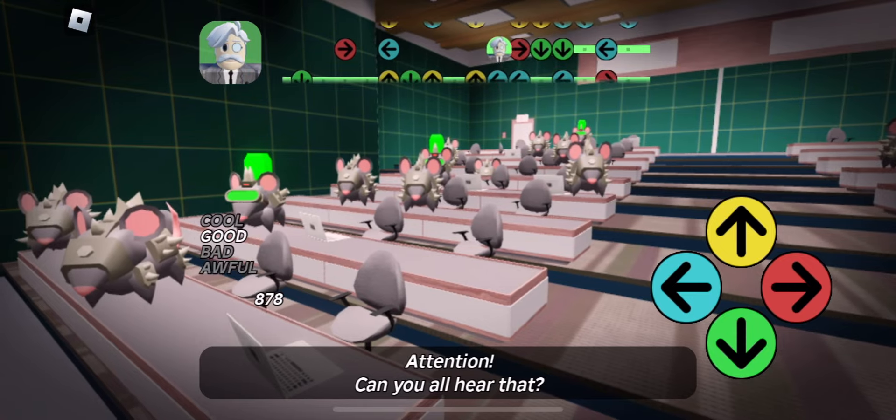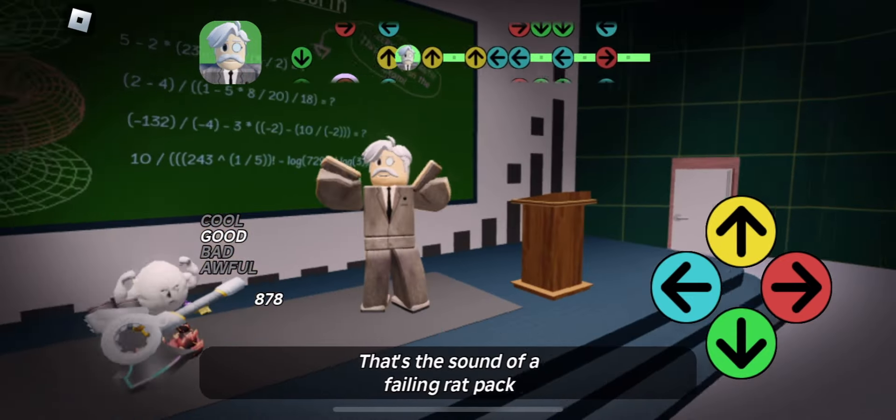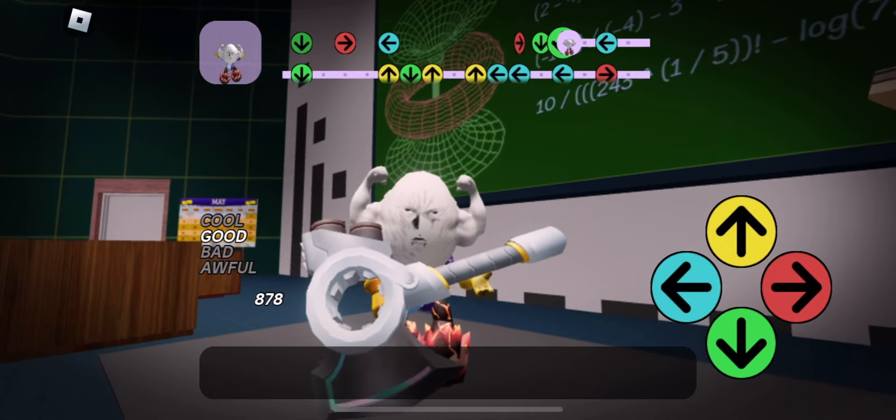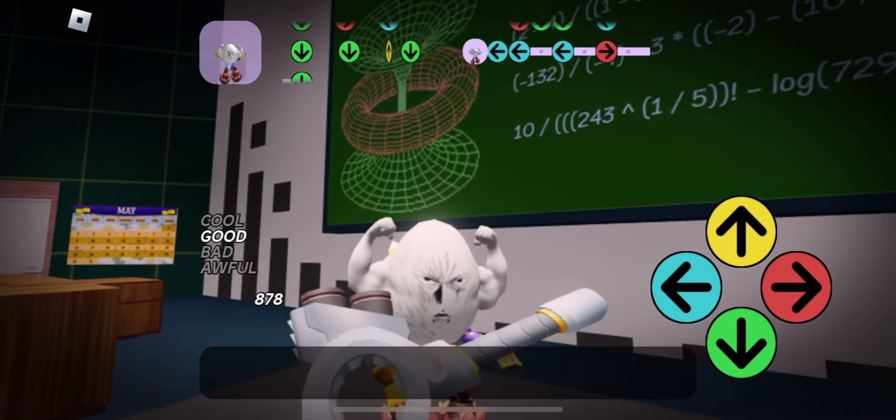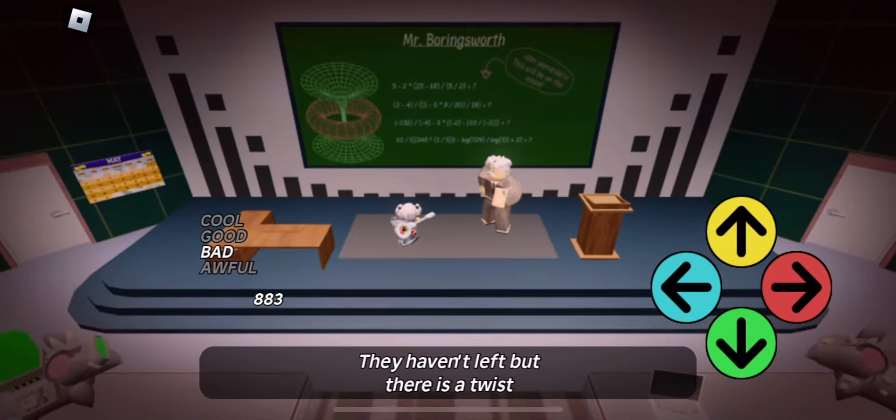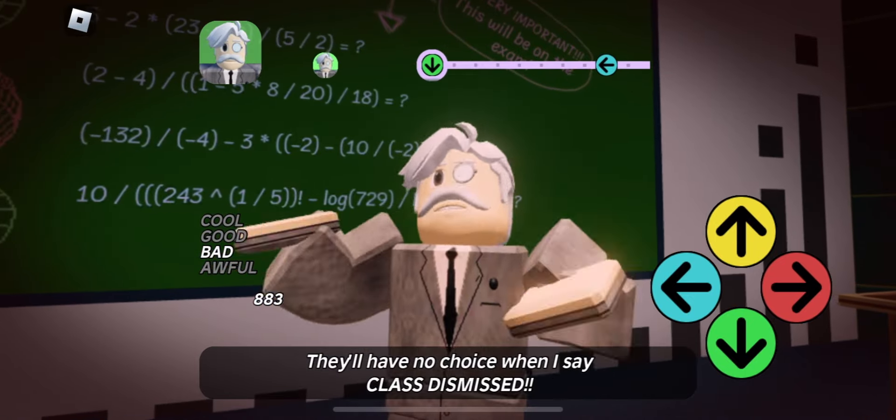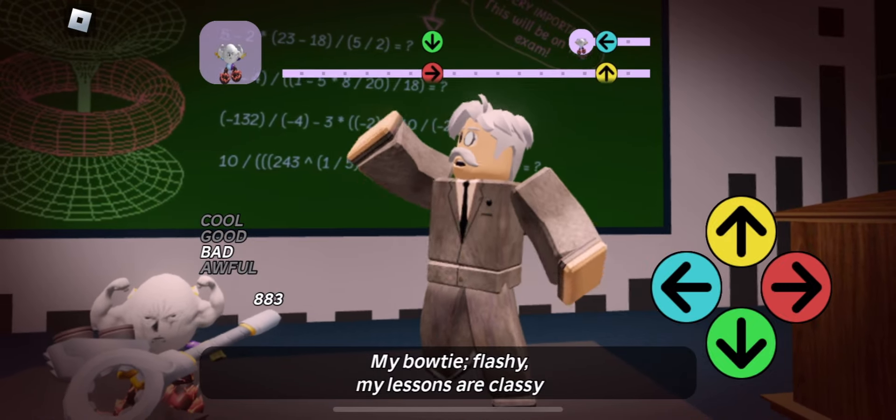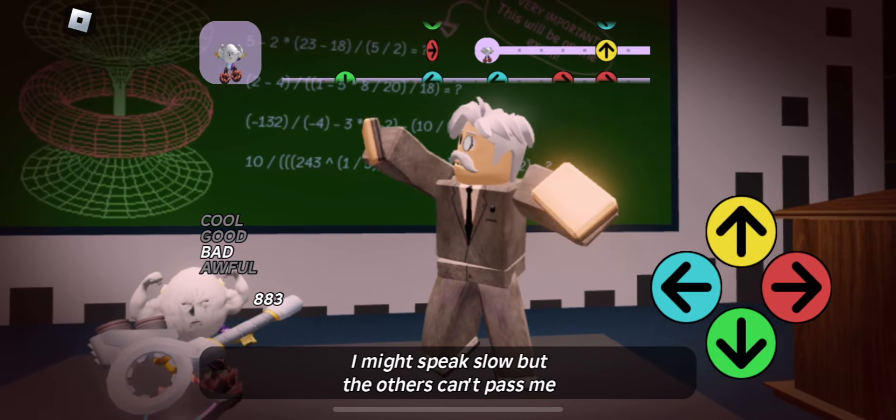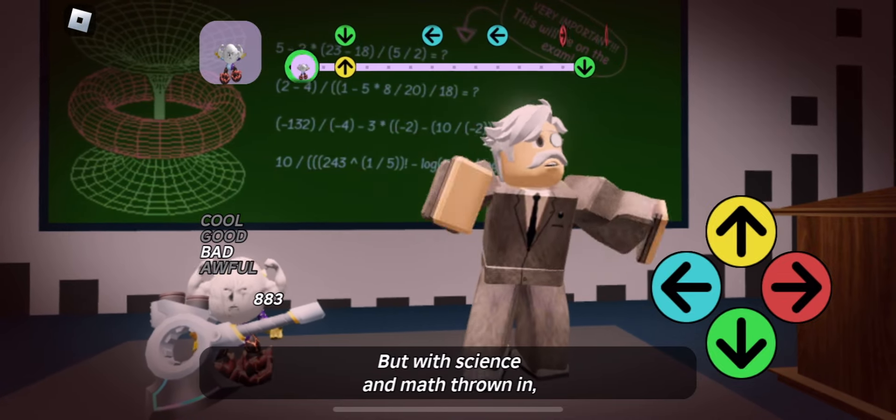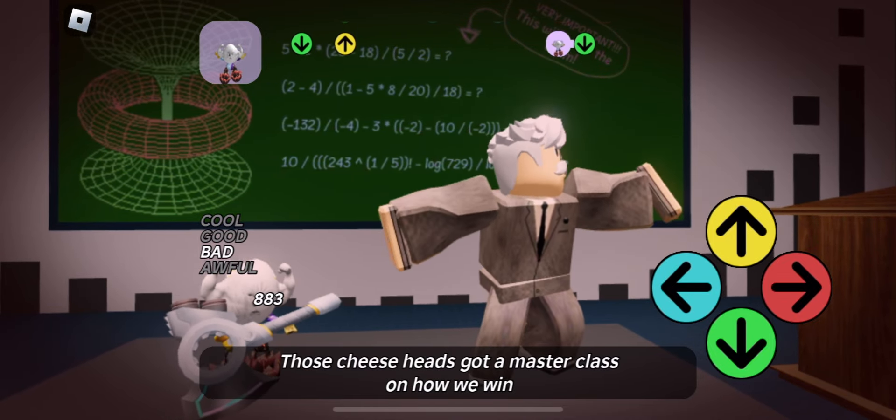Attention. Can you all hear that? That's the sound of a failing rat pack. They have it left, but there is a twist. They'll have no choice when I say class dismissed. My bow tie flashy. My muscles are classy. I might speak slow, but the others can't pass me. But with science and math thrown in, those cheeseheads got a masterclass on how we win.